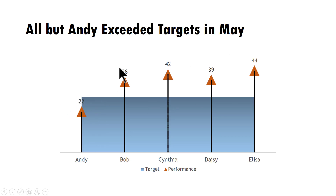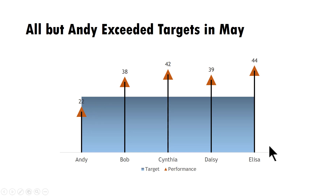The title says 'All but Andy exceeded targets in May.' You can see that only Andy was not able to exceed the target — everyone else has. Your audience will be able to look at the title and instantly find the evidence in the chart, and it is instantly registered in their minds. This chart is not like the run-of-the-mill charts you'd normally find in a boardroom presentation — it looks different and will be remembered.